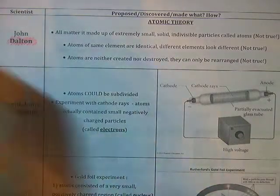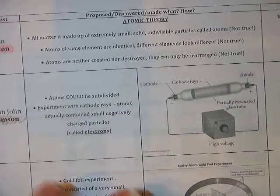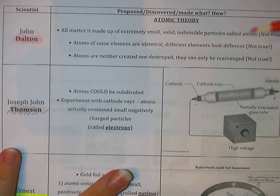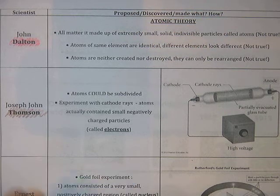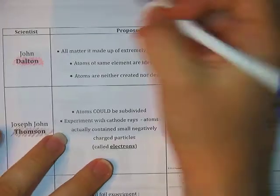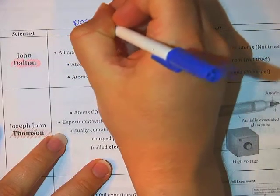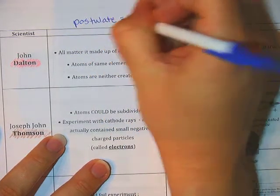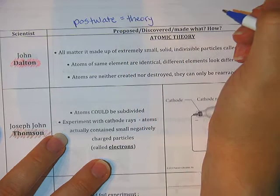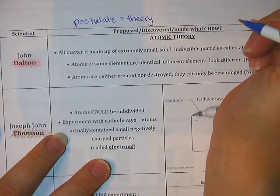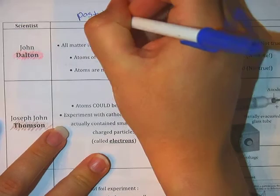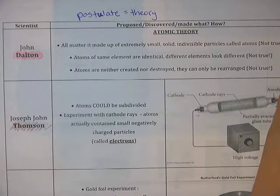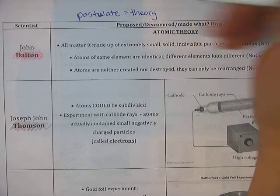John Dalton is the first modern scientist who really had an atomic theory, and the reason I'm using red for him is because he had some basic postulates. That's a fancy word — postulate. A postulate is basically a theory; there's a little more to it than that, but we're going to treat them the same for simplicity. You'll also talk about postulates in geometry, and your geometry teacher will tell you more about the difference.